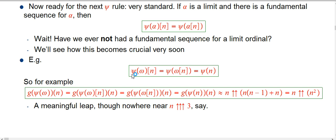The simplest example, after doing psi of all the finite ordinals, is just to do psi of omega. So psi of omega bracket n is just psi of n. Very standard compared to lots of examples we've done.